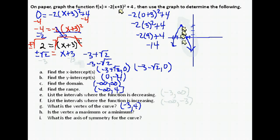Is the vertex a maximum or minimum? From the beginning we could tell it opens downward because of that negative 2, so it has a maximum point, which is the vertex. The axis of symmetry is always x equals the x-coordinate of the vertex. Our vertex is at (-3, 4), so the axis of symmetry is the line x = -3.